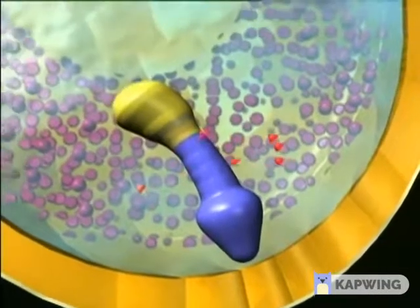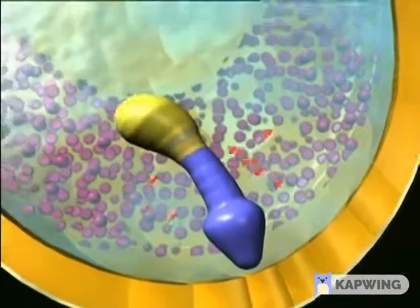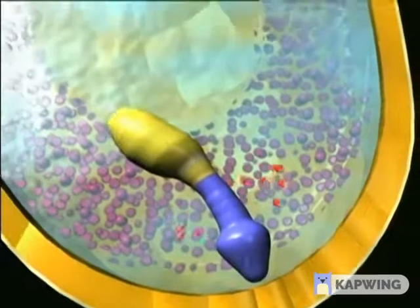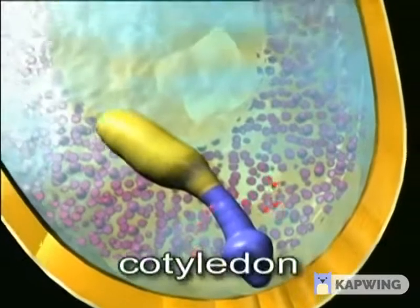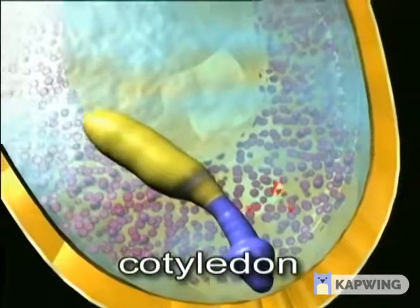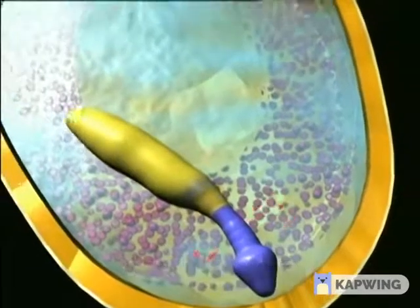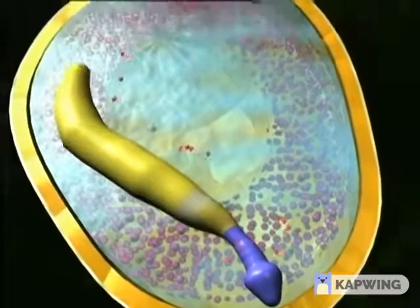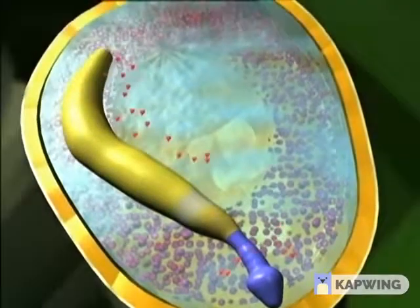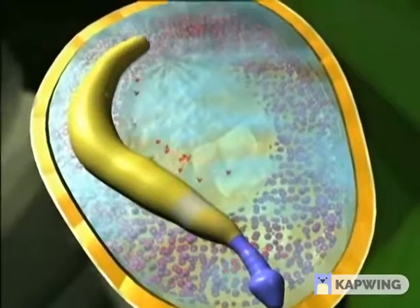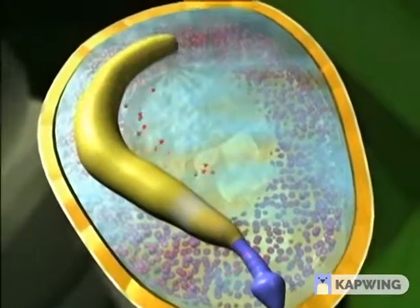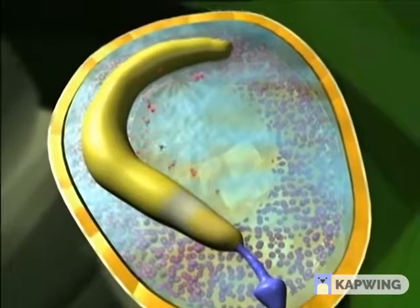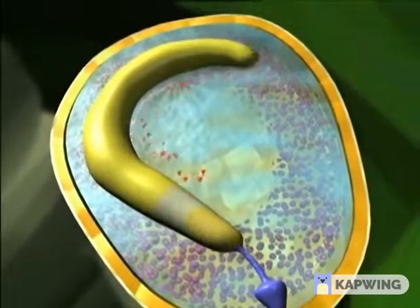In monocotyledons, a single seed leaf or cotyledon forms. As it enlarges, the embryo also receives nutrients directly from the surrounding endosperm.